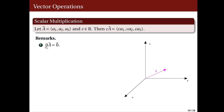The zero scalar multiplied by any vector will result in the zero vector. The norm of the resulting vector c·a is equal to the absolute value of c times the norm of a. Take note that c·a is a vector, but the norm is a scalar.